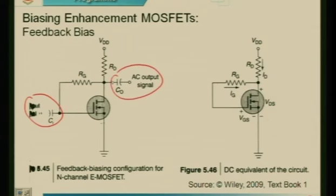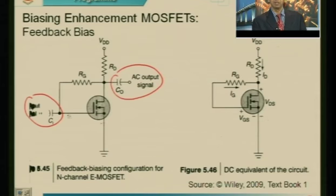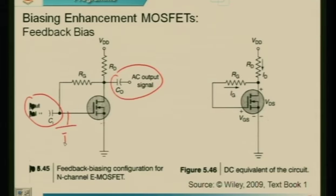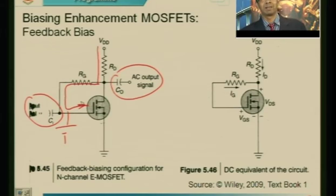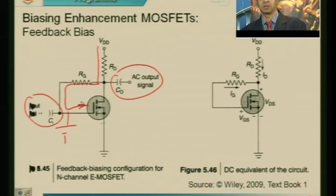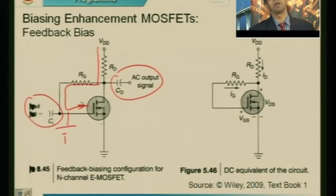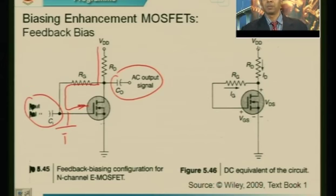Just like before, you give the small signal to the input coupled through a capacitor, and take the output from the drain terminal, again coupled through a capacitance. In feedback bias, I am not giving a separate voltage source to the gate. Instead, I use the existing voltage source and feed it back to the input through a resistor called the feedback resistor or gate resistor RG. In the DC equivalent circuit, the capacitors block any DC component, leaving only the DC components in the circuit.